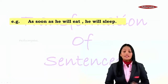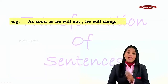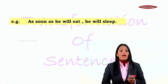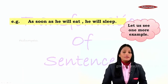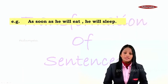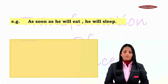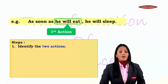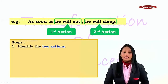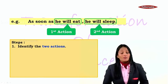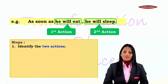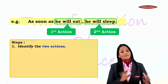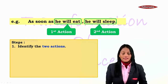Let's take one more sentence. There we had 'when,' now we have 'as soon as': 'As soon as he will eat, he will sleep.' First step — identify the two actions: 'he will eat' and 'he will sleep.' Remember, all the changes take place in the first action; the second one remains as it is.